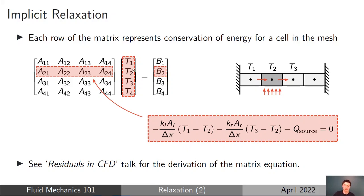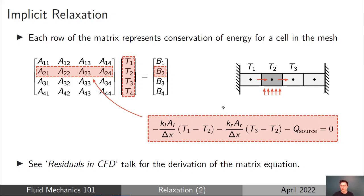Each row of the matrix represents conservation of energy for a particular cell in the mesh. The second row represents conservation of energy for cell 2, and the other rows represent conservation of energy for the other cells. So altogether, the matrix equation represents conservation of energy for all cells in the mesh. For more detail on where the coefficients A21, A22, and B2 come from, see the residuals in CFD talk.